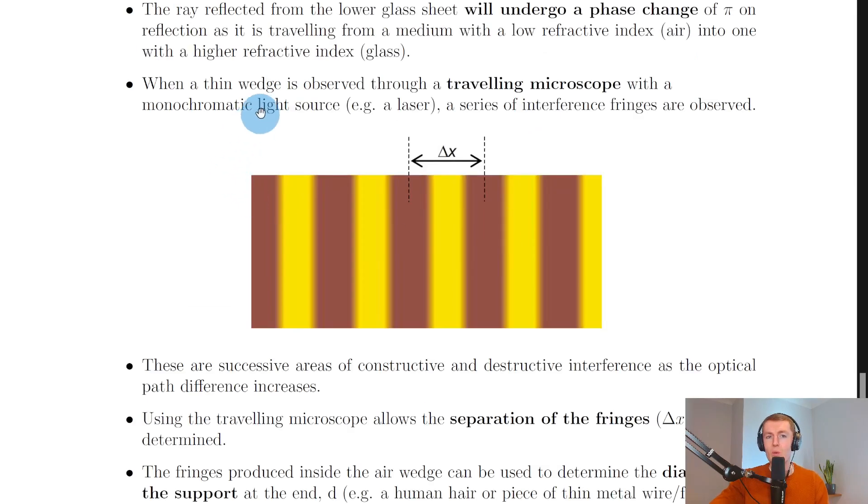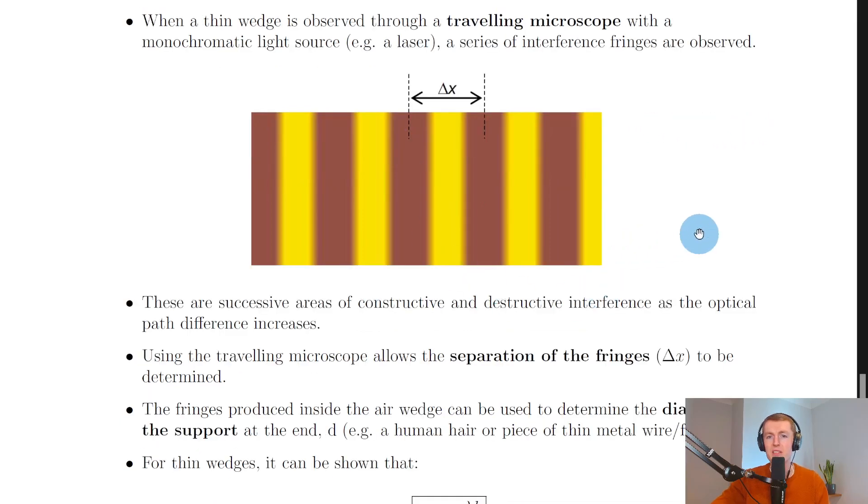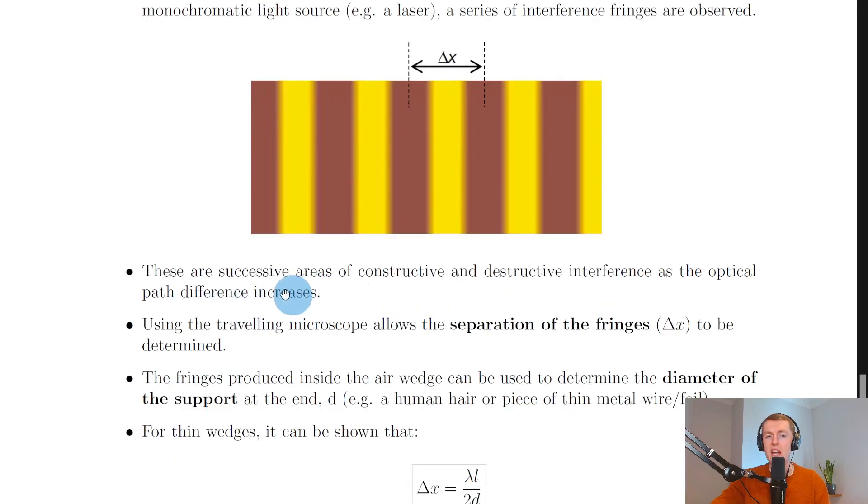When a thin wedge is observed through a traveling microscope with a monochromatic light source, for example a laser, a series of interference fringes are observed. What you might see is a pattern that looks something like this with some dark bands or some light bands. These are successive areas of constructive and destructive interference as the optical path difference increases.